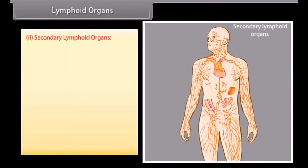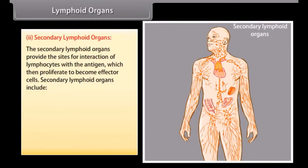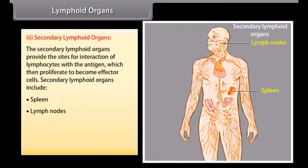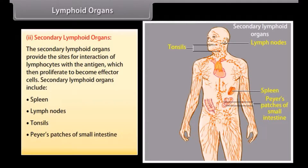Secondary lymphoid organs provide the sites for interaction of lymphocytes with the antigen, which then proliferate to become effector cells. Secondary lymphoid organs include spleen, lymph nodes, tonsils, Peyer's patches of the small intestine, and appendix.